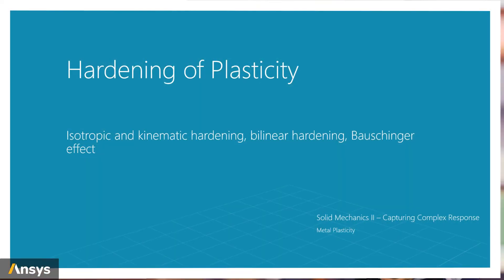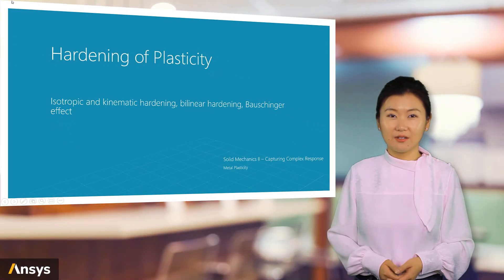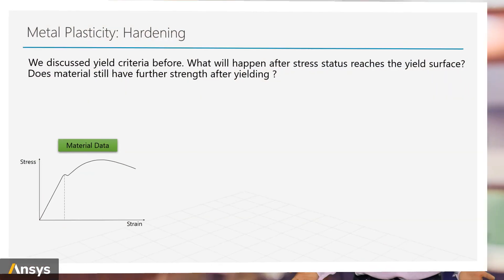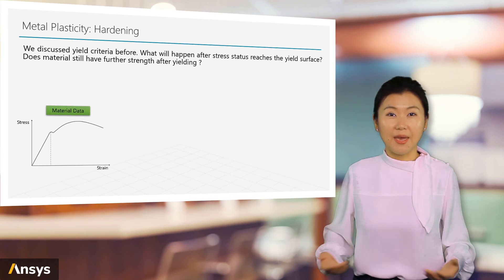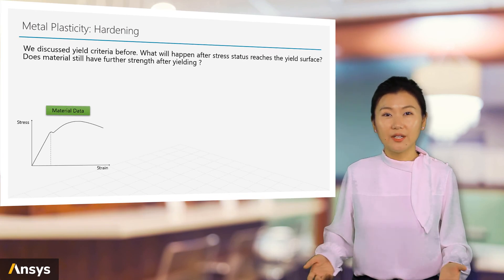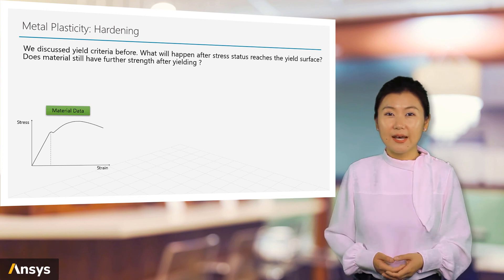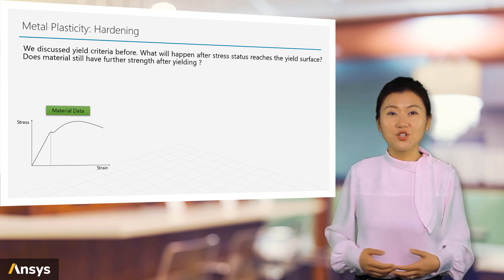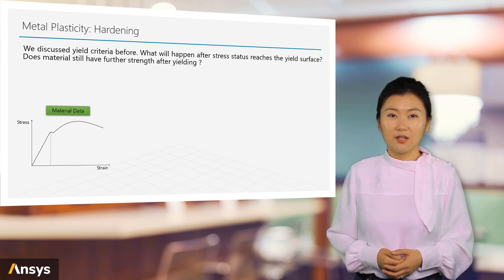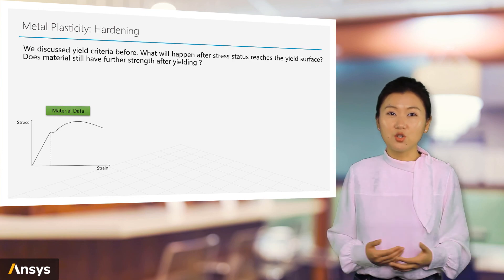Now let's discuss what will happen after reaching the yield surface for material state. In real life, the behavior of a material is affected by different factors, for example different batches of material from manufacturing, different quality, different testing equipment. Besides, the measured stress-strain curves are usually not smooth curves; it's almost impossible to use the raw data.